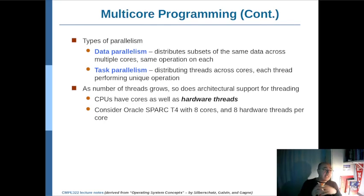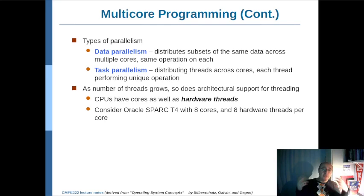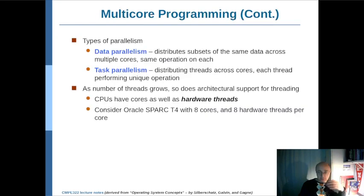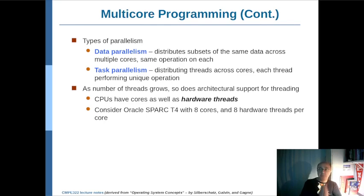Whereas when we execute not the same instruction but different procedures or functions distributed to different cores — like T1 is one function with different instructions and T2 is another task with different instructions — in this case we have multiple instructions across different tasks or functions running on multiple data. So that is MIMD: multiple instruction, multiple data.